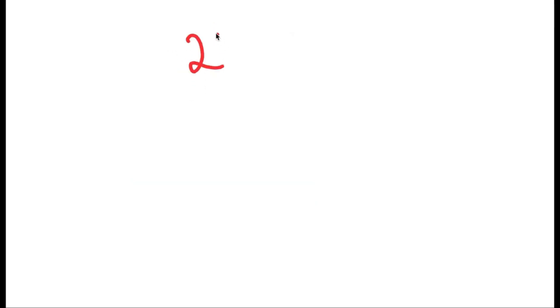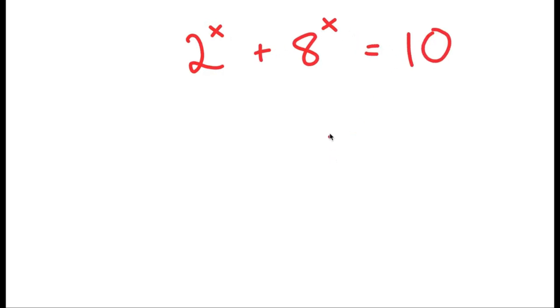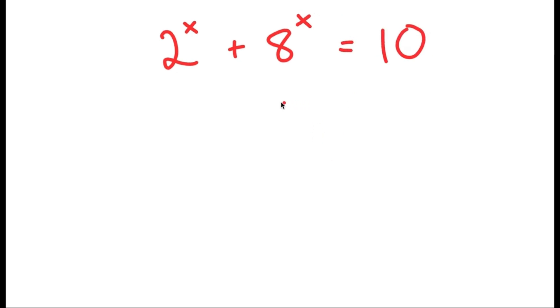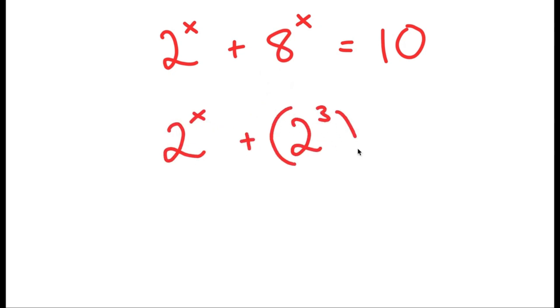In this video I'm going to solve the equation 2 to the power of x plus 8 to the power of x is equal to 10. To solve this, I'm going to start by rewriting 8 as 2 to the power of 3, so I get 2 to the power of x plus 2 to the power of 3 to the power of x is equal to 10.